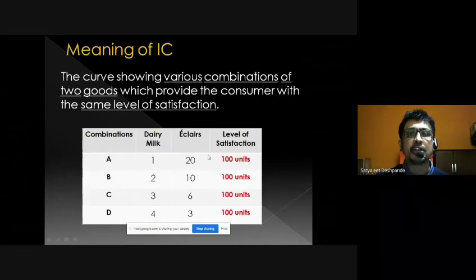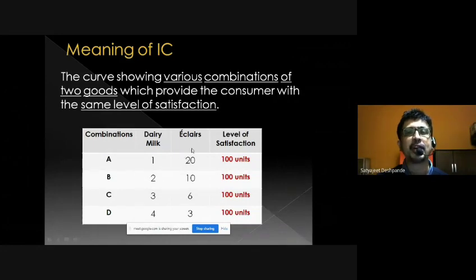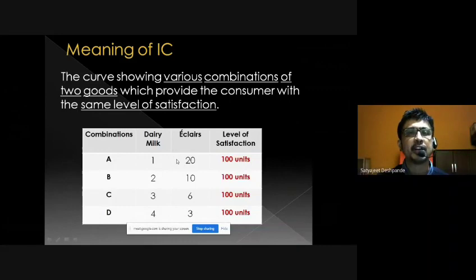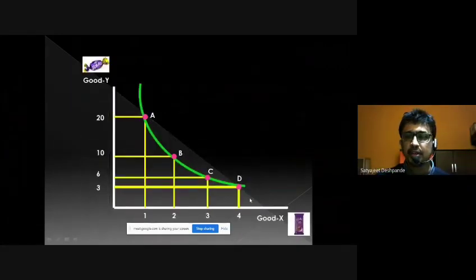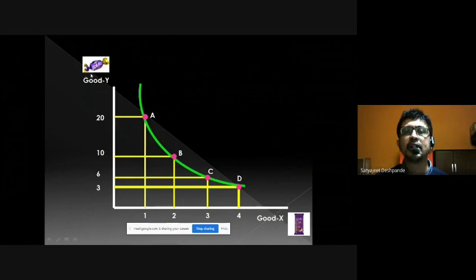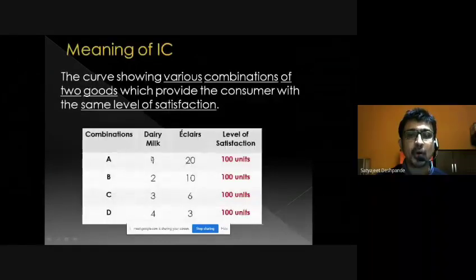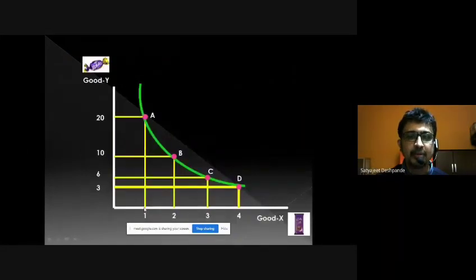Now it is time to convert this information into a curve. We will plot these combinations on a graph paper. On the X-axis we will take Dairy Milk and on the Y-axis we will take Eclairs. We will plot the combinations and join them to get the indifference curve. On the X-axis we have units of Dairy Milk Silk, and on the Y-axis we have units of Cadbury Eclairs. Point A is the first combination: one Dairy Milk on the X-axis plus 20 Eclairs on the Y-axis.